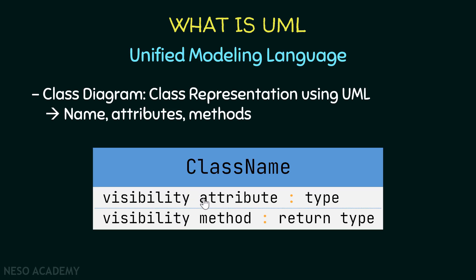Let's start with the attributes. In order to represent an attribute we should specify its visibility — is the attribute public, private, or protected? After that we have the name of the attribute, then a colon, and after that the type of the attribute. When we finish all the attributes we put a separator and then specify all the methods.